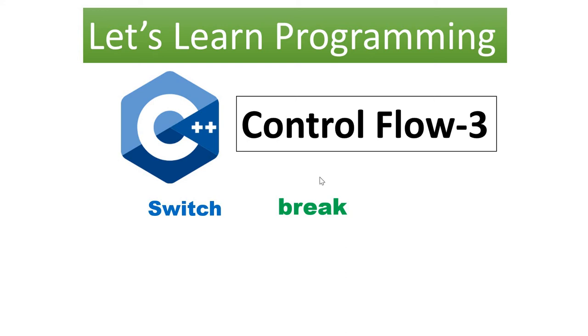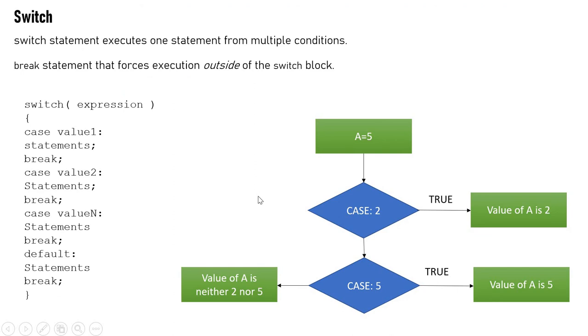In this video we will see the switch and break statements. What is switch? When you define a normal variable, for example A equals 5, then you will give so many conditions or cases. You can say first case if 2, second case 3, or 4 or 5. You can make many cases up to N which you can make according to the code.